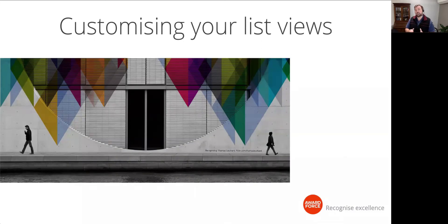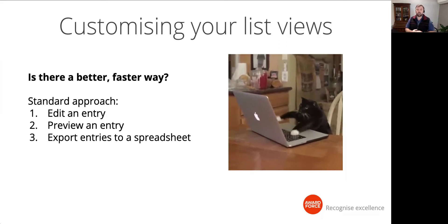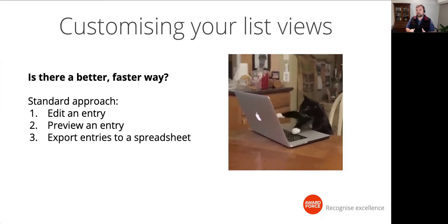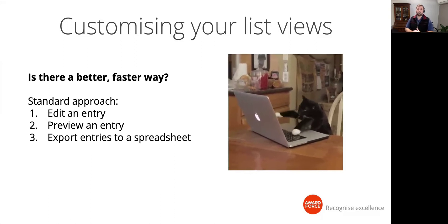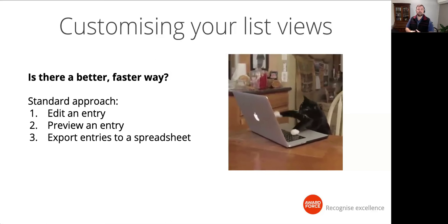Our first topic today is customizing your list views. Program managers often ask us for better and faster ways to find information within entries. It's not uncommon to either preview or edit entries to locate information needed, or even export all entries to a spreadsheet. But what about when you need to see this information across many entries efficiently within your awards platform?